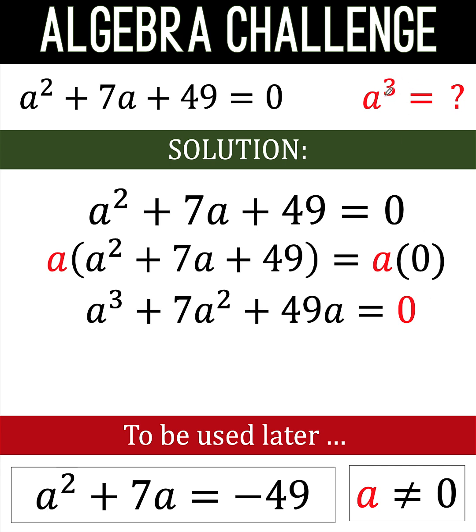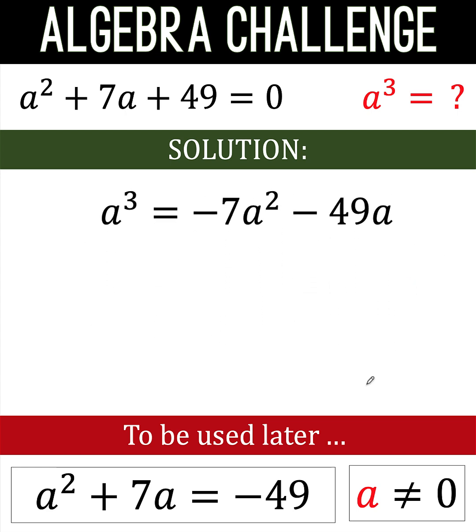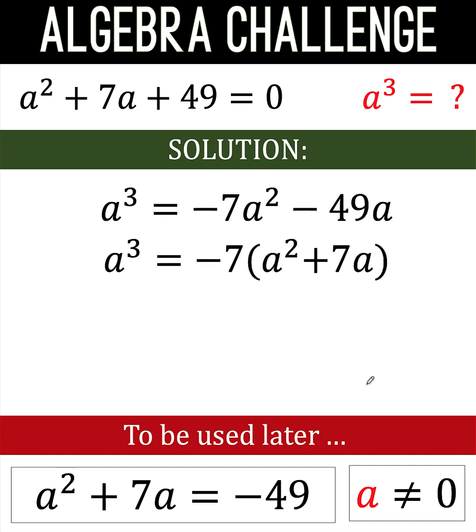Since we are solving for a cubed, let's isolate a cubed at the left side of the equation by subtracting 7a squared and 49a from both sides of the equation. And to simplify this further, notice that negative 7 is common between the two terms at the right side of this equation. So let's factor out negative 7 to arrive at this expression.